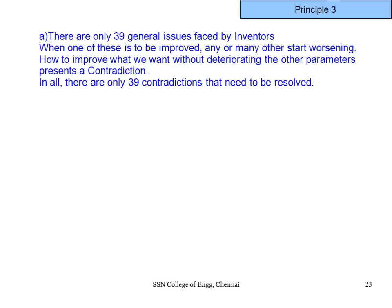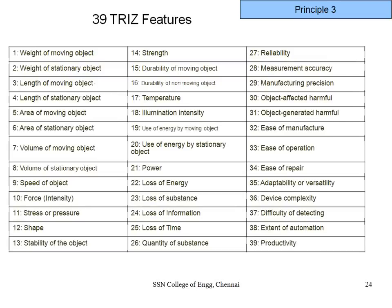Principle 3 is very interesting. To recap: Principle 1 says there is no new problem; Principle 2 says unless there is a contradiction there is no innovation. Principle 3 goes one step further — the inventor says there are only 39 general engineering issues any of us are trying to resolve. When one is improved, any or many of the others start worsening. Therefore there are only 39 contradictions. Surprisingly, he provides a complete list.